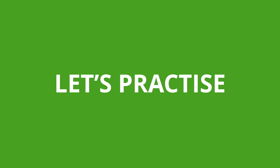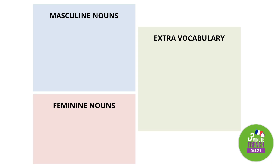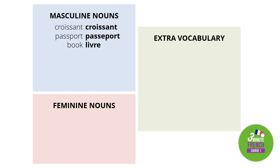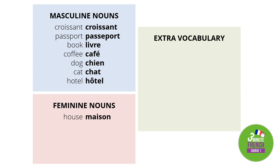Let's practice. Have a go at saying these sentences in French. Here is some vocabulary that you might need. Some masculine nouns: croissant is 'croissant', passport is 'passeport', book is 'livre', coffee is 'café', dog is 'chien', cat is 'chat', and hotel is 'hôtel'. Some feminine nouns: house is 'maison', car is 'voiture', bill is 'addition', key is 'clé', and table is 'table'.